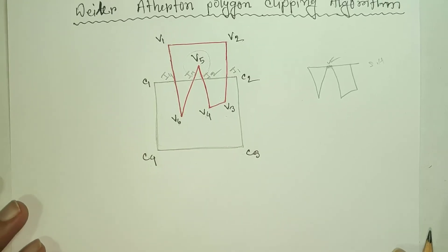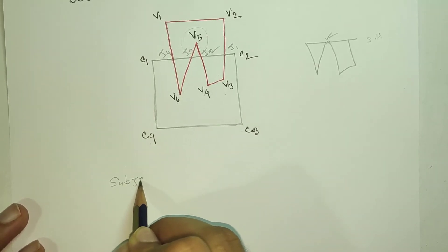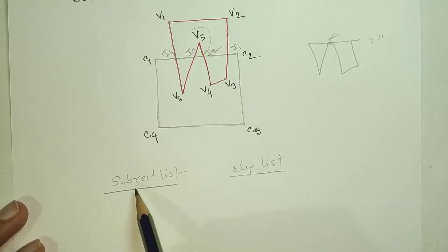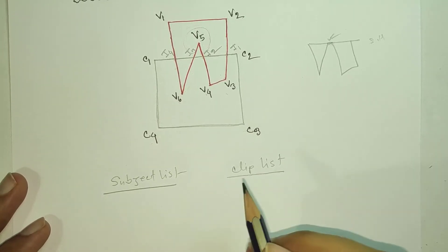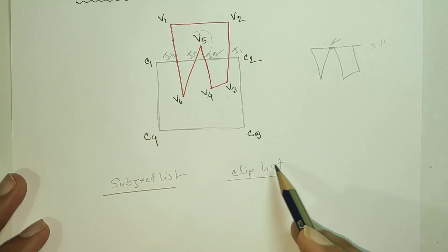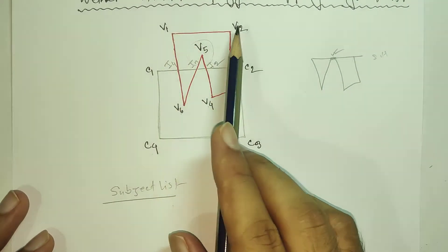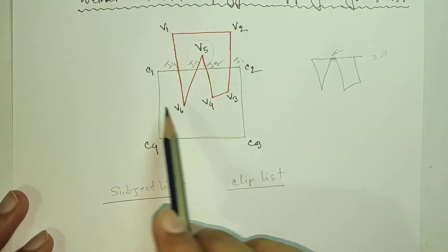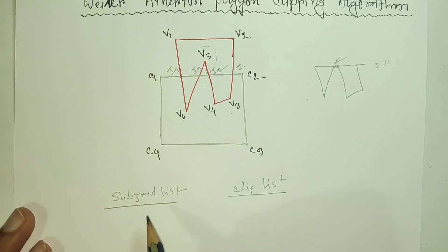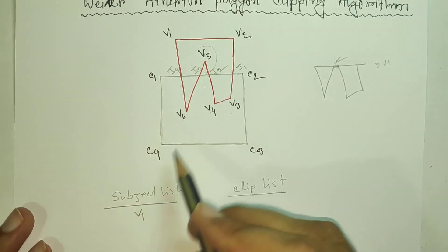The list is the subject list and the clip list. The subject list is the vertex and intersecting point. Similar to the clip list, which is the vertex and the opposite view. This is clockwise — we go to v1, v2, v3, v4, v5, v6 clockwise in the plane. In the subject list, the first place is v1, then v2, then i1.